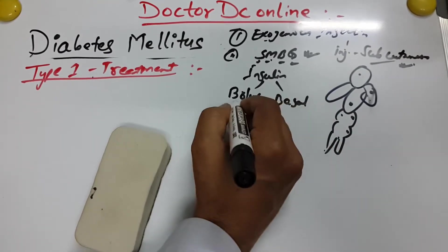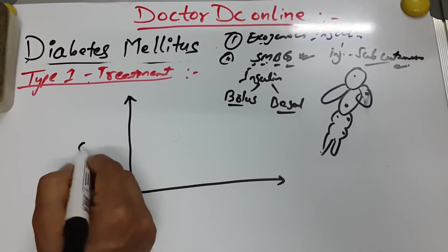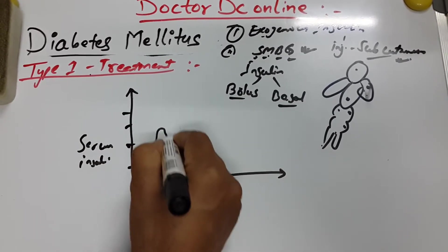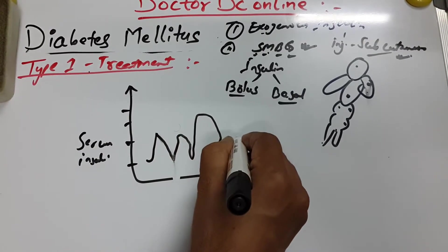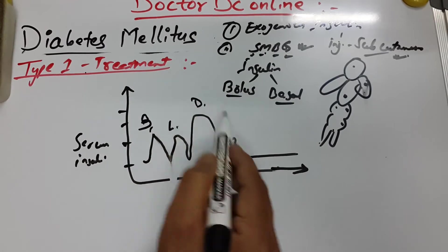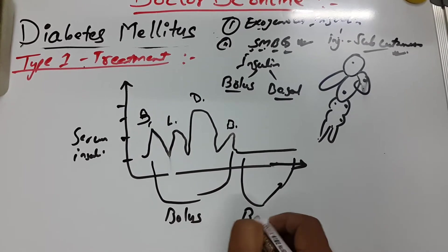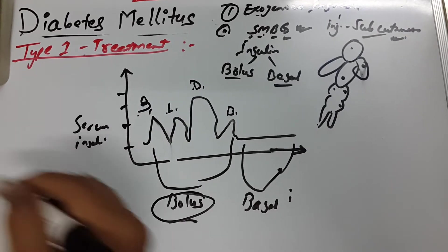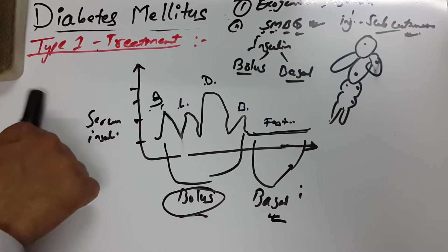Let me describe bolus and basal insulin using a graph. On the X-axis we have time: breakfast, lunch, dinner, bedtime, and fasting. On the Y-axis is serum insulin level. We give bolus insulin at breakfast, lunch, dinner, and bedtime. In the fasting state, serum insulin is very low, so we give basal insulin.